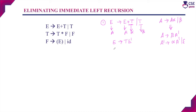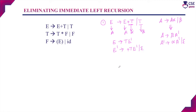The next step: A-dash derives alpha A-dash or epsilon. A-dash is E-dash and alpha is plus T, so we get E-dash derives plus T E-dash or epsilon. So instead of E derives E plus T or T, we now have two productions: E derives T E-dash, and E-dash derives plus T E-dash or epsilon. The left recursion in the first production is now eliminated.